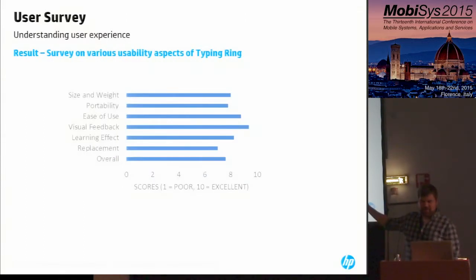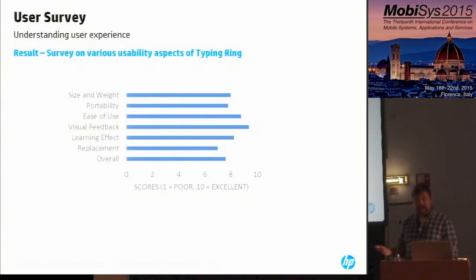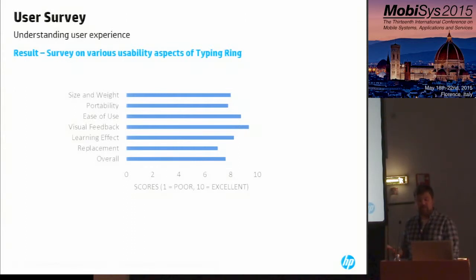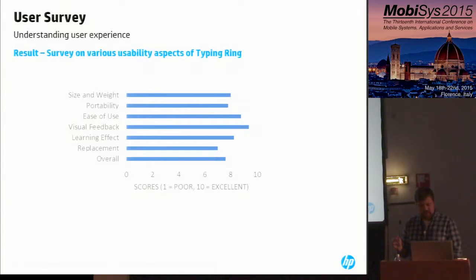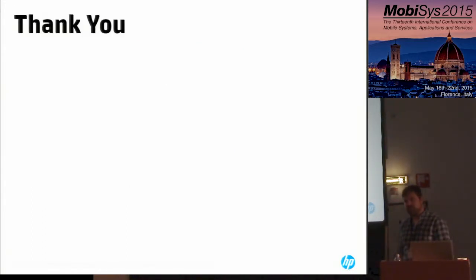At the end of the study we asked the 18 users about size, weight, portability, usability, and visual feedback, and whether they'd consider the ring a replacement for other text input methods. Overall scores were good. Everyone loved the visual feedback, found the system easy to use, and felt they improved with practice. Several found it fine for typing but wouldn't want to wear it all day. Some complained about the size, as it's larger than a typical ring. A concern raised by multiple users was the flat placement of fingers on a surface to make Typing Ring work, which required some practice. That concludes the talk; I'd be happy to take any questions.